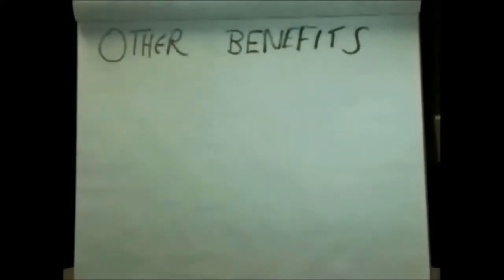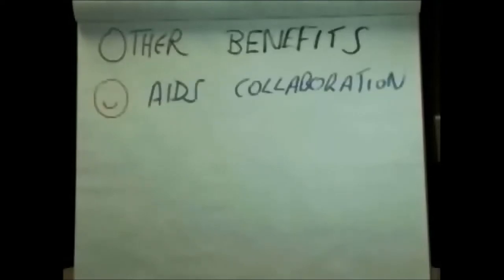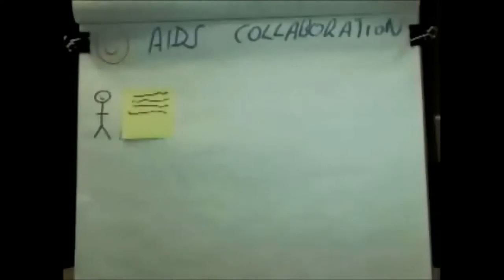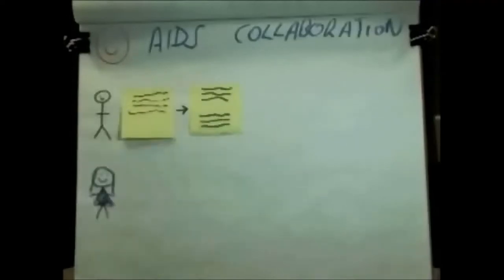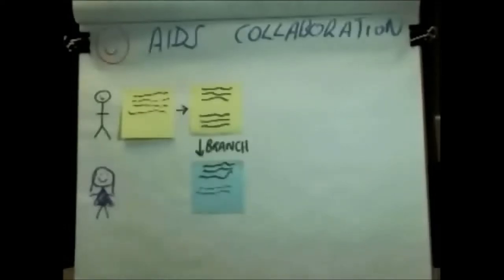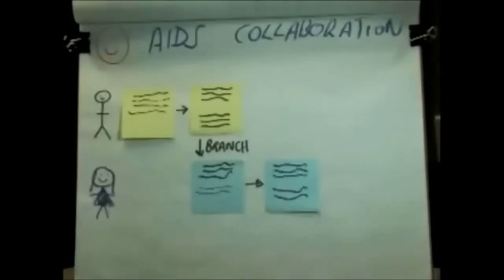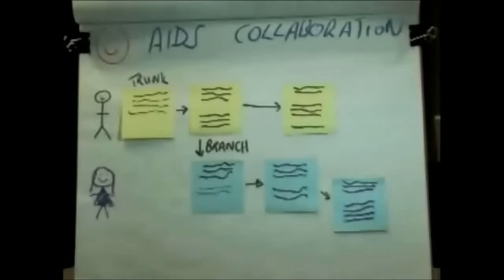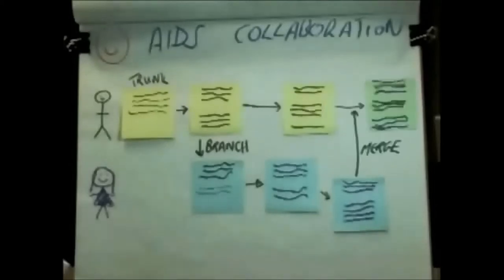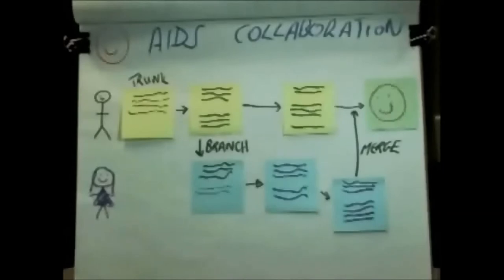Subversion is also a great aid to working collaboratively on code. One person starts writing code and saves it to Subversion, improves it, and commits it again. Then a teammate checks out the latest version and makes some changes. They can save those changes separately by creating a branch. Meanwhile, the original author continues on the main trunk version. Then they decide to merge the best bits from both versions. Subversion will flag any conflicts between the different versions of code and let you decide what to do — it won't simply overwrite your files. So Subversion makes it easier to collaborate.